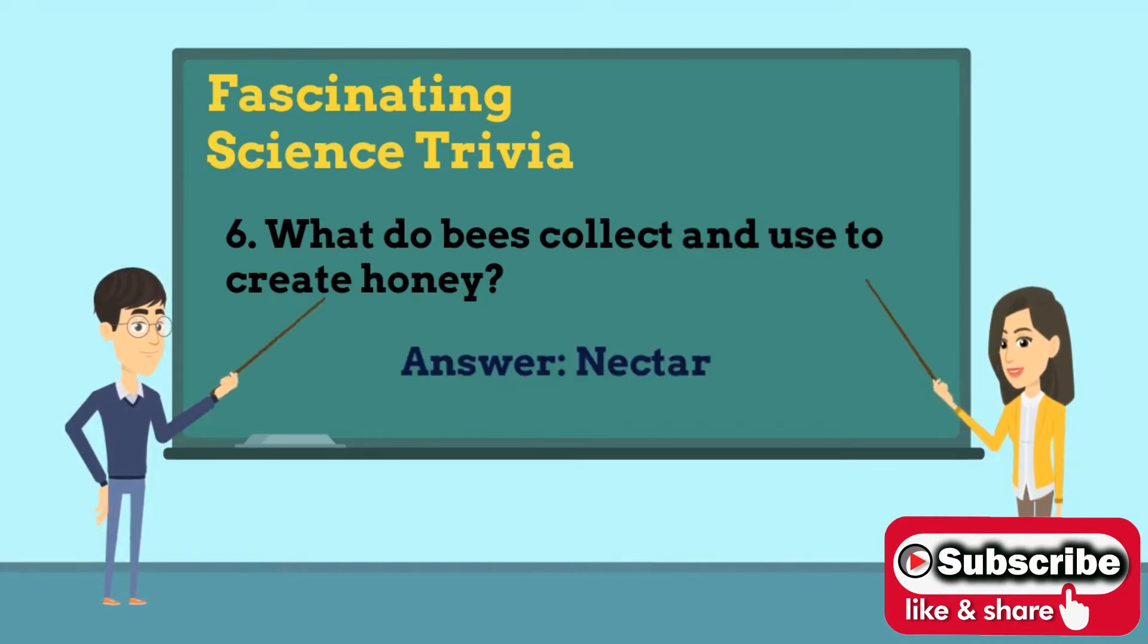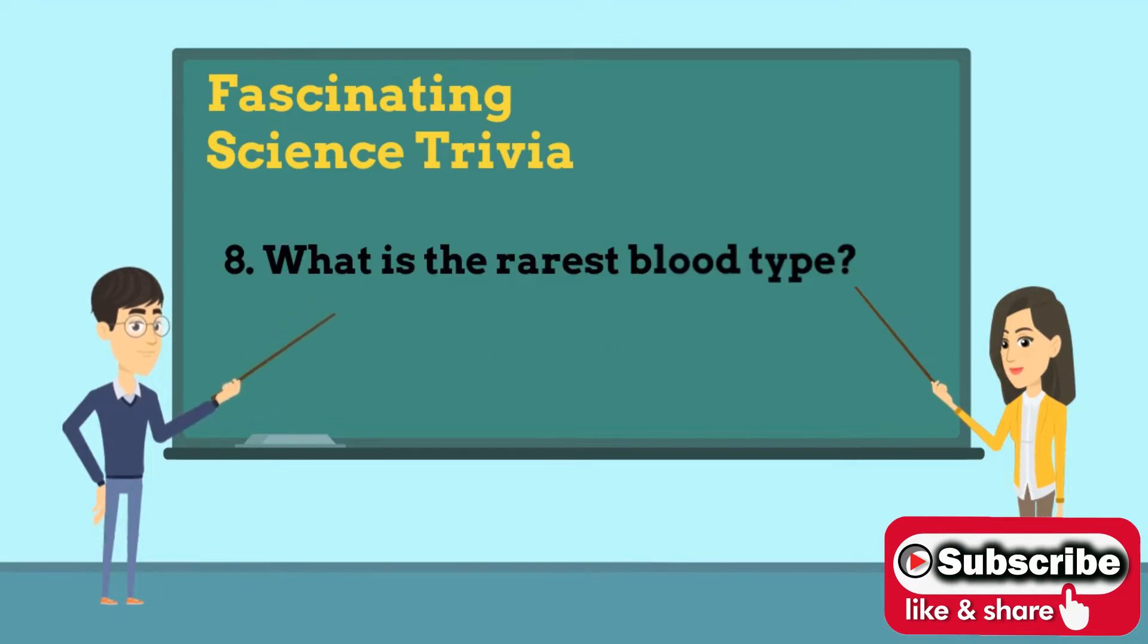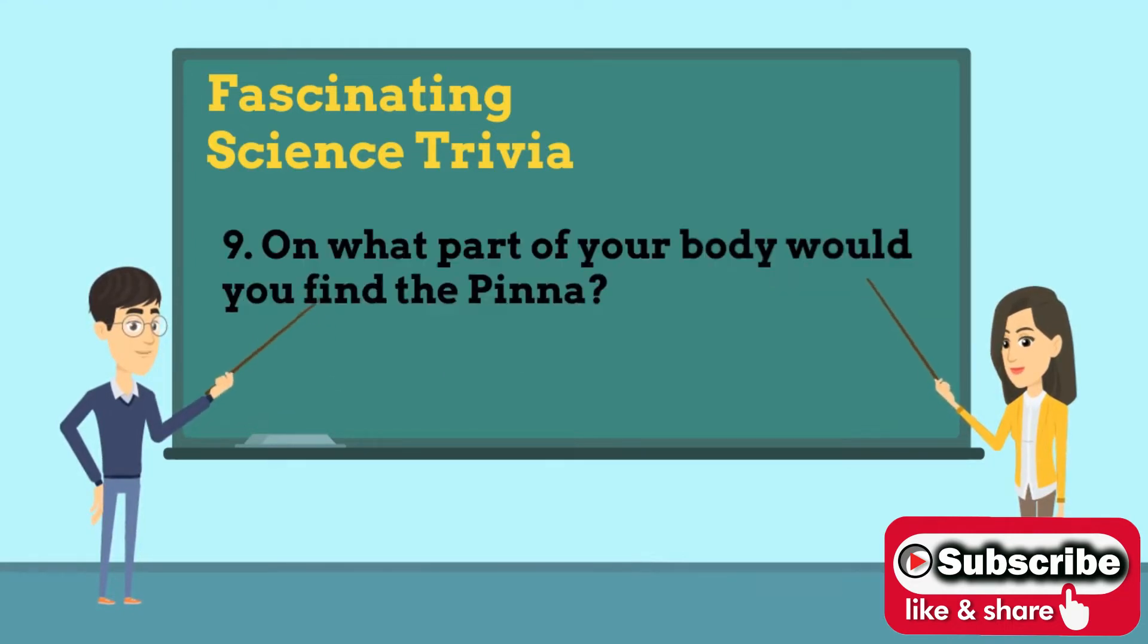honey? Answer is nectar. Number seven: What is the hottest planet in the solar system? Answer is Venus. Number eight: What is the rarest blood type? Answer is AB negative. Number nine: On what part of your